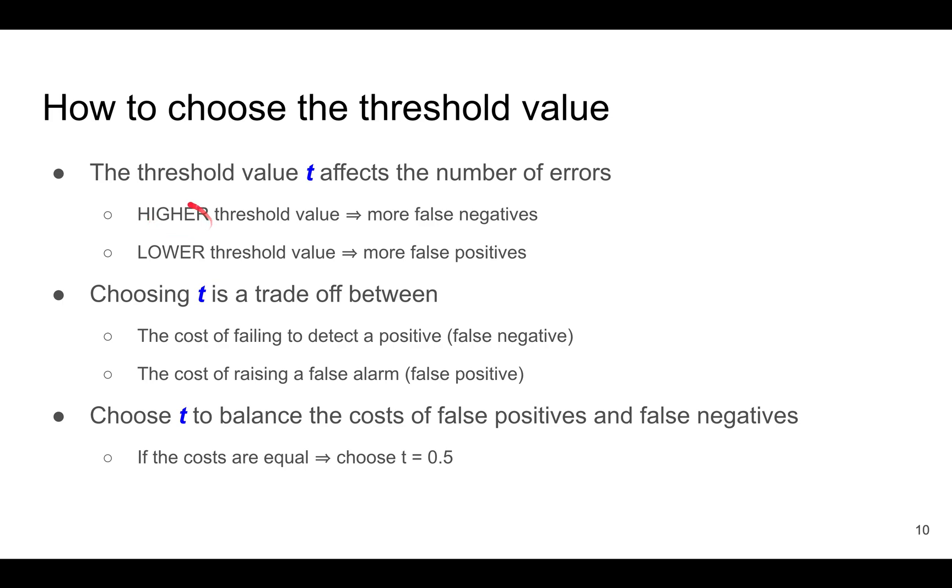If you choose a very high threshold value, you have more false negatives. But if you choose a very low threshold value, you have more false positives.